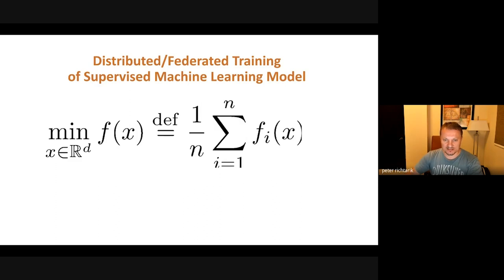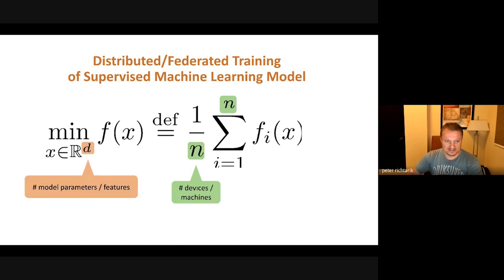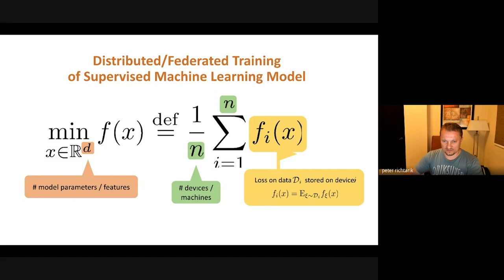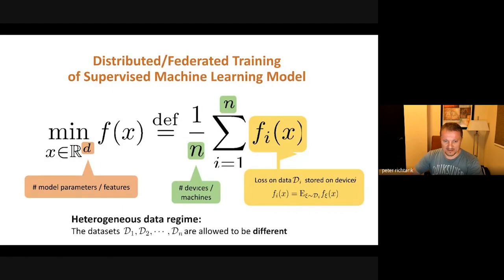We are working with a distributed setup where you want to minimize an average of functions; N is very large. You can think of N as being large but not exactly infinite. There are a number of devices, these are the number of parameters. Fi is the loss of model x on data stored on device i, and we don't assume any kind of homogeneity assumption. All of this data could be arbitrarily different. This is a very standard problem where we try to train one single joint model, not a personalized model, for all N devices.